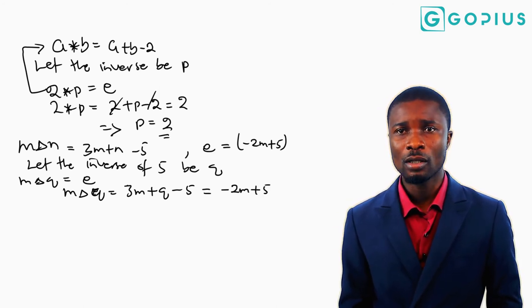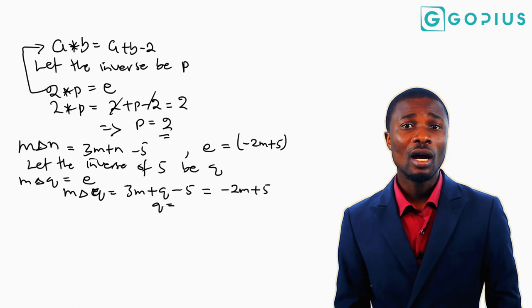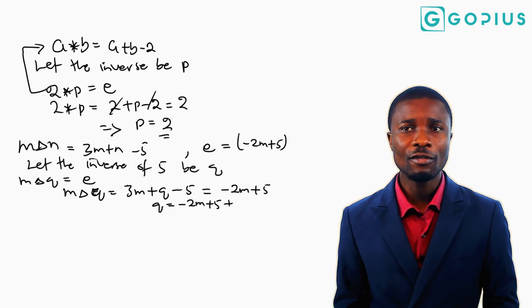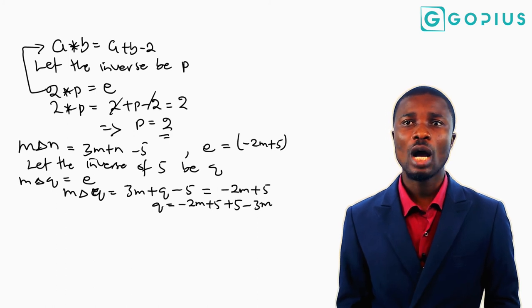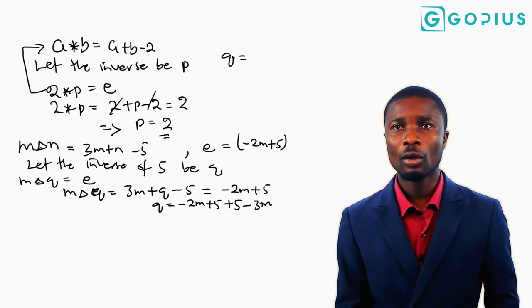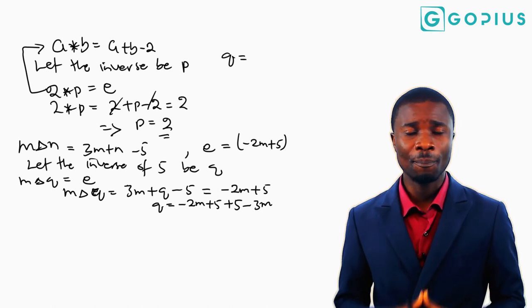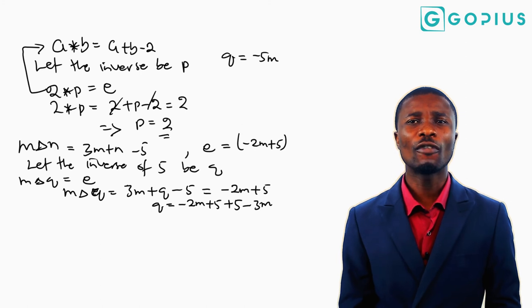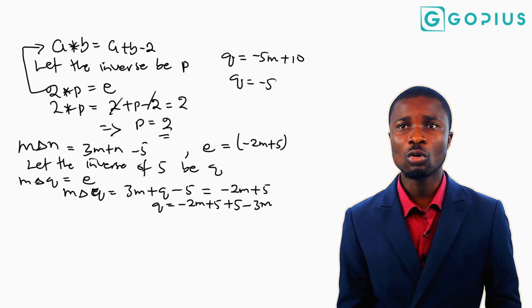Making q the subject, we transfer minus 5 and 3m to the other side: q equals minus 2m plus 5 plus 5 minus 3m. Combining like terms: minus 3m minus 2m is minus 5m, and 5 plus 5 is 10. So q equals minus 5m plus 10, which is the inverse of 5 under the delta operation.